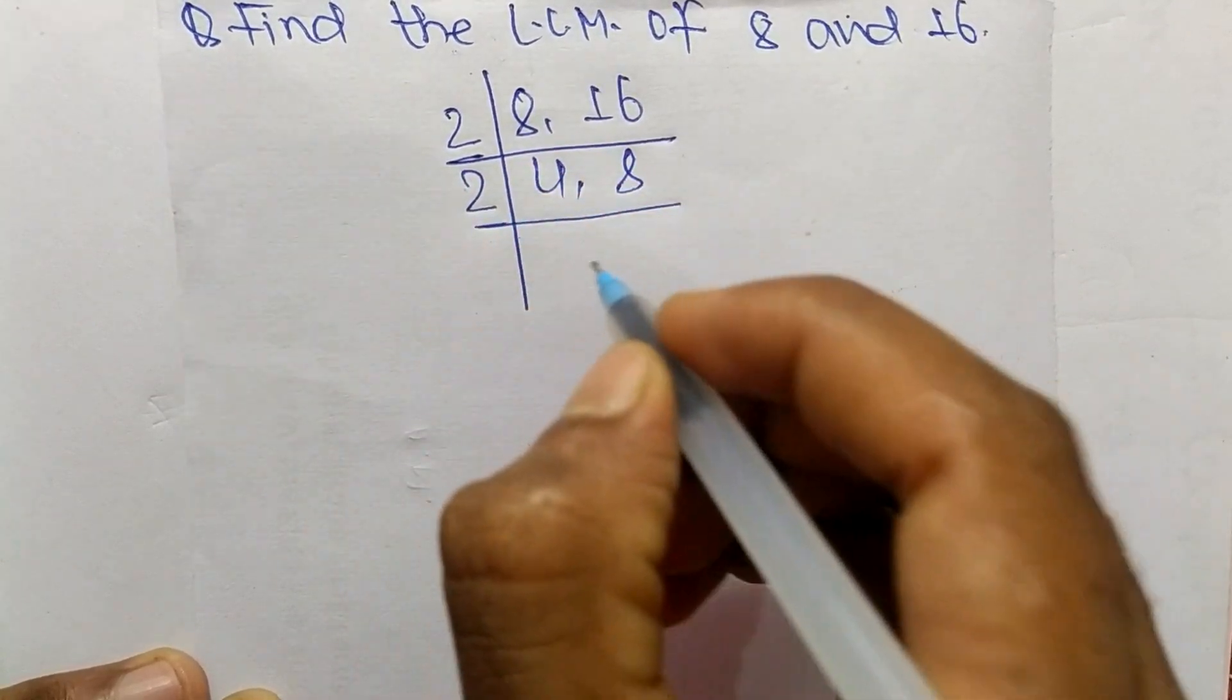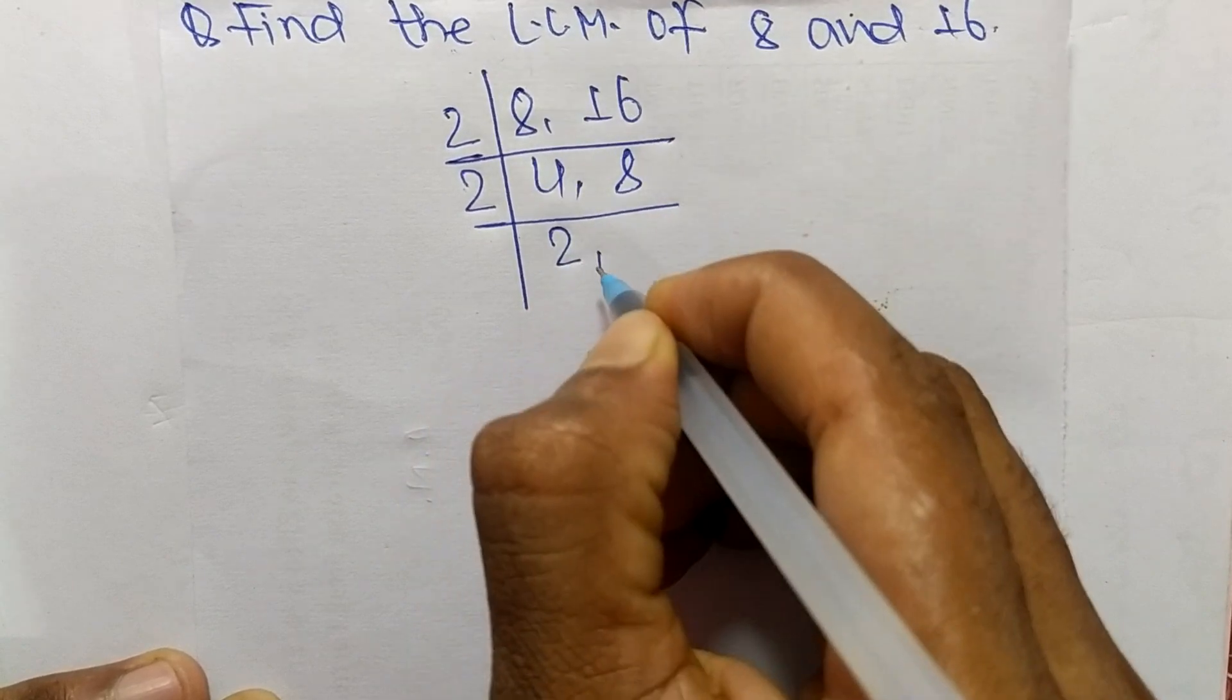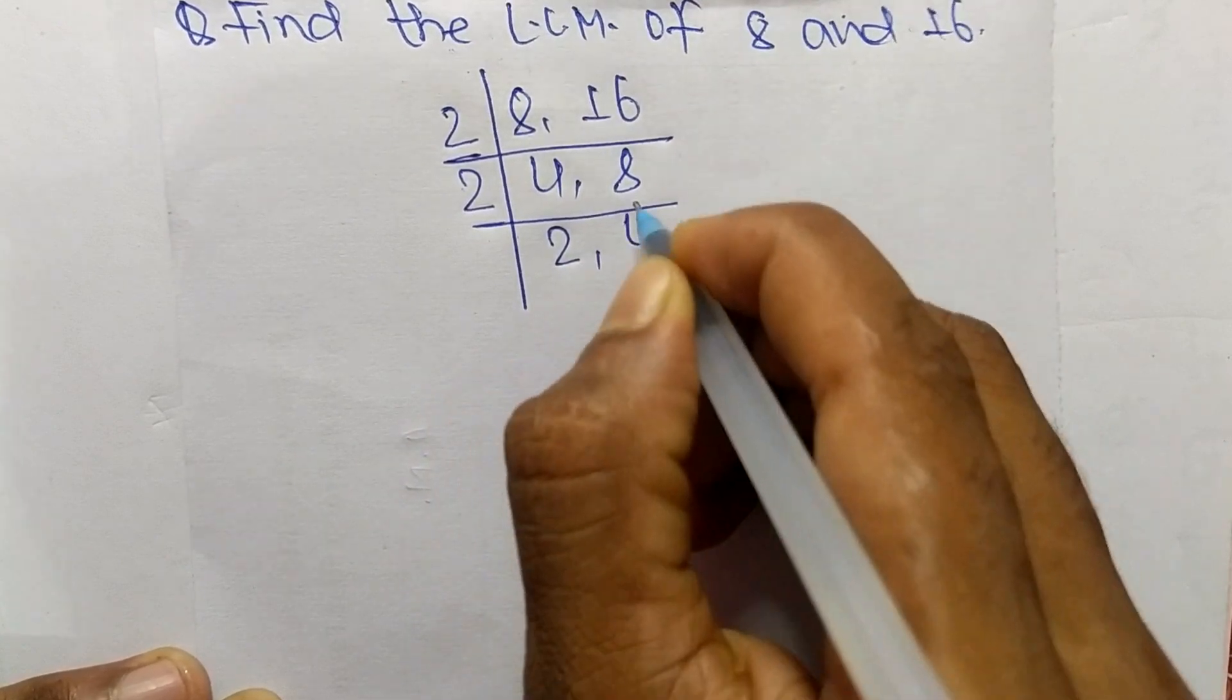So we again take here 2. So 2 times 2 means 4 and 2 times 4 means 8.